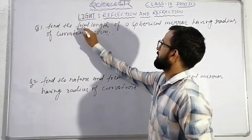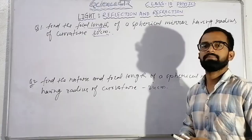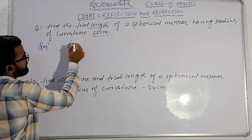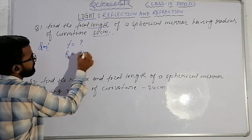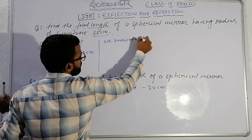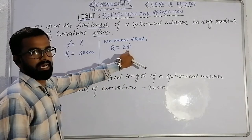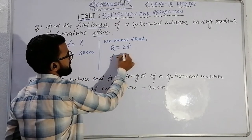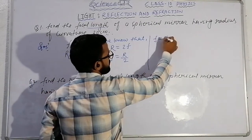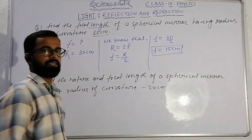Now let's solve an example. Find out the focal length of a spherical mirror having radius of curvature 30 centimeters. Given: radius of curvature R is equal to 30 cm. We know that R is equal to 2f, so f is equal to R upon 2. Therefore, f is equal to 30 upon 2, that is f is equal to 15 cm.